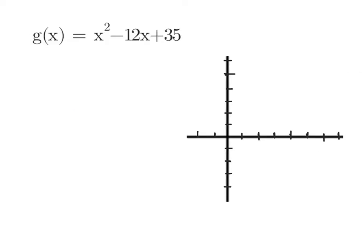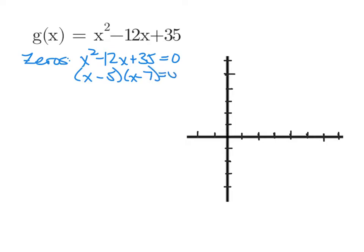I want to review how to graph a parabola when given the function. The first thing we want to do is identify any zeros. So we take the function x squared minus 12x plus 35 and set it equal to 0. We can factor that as (x minus 5)(x minus 7). Our roots are x equals 5 and x equals 7, meaning our zeros are 5 and 7.